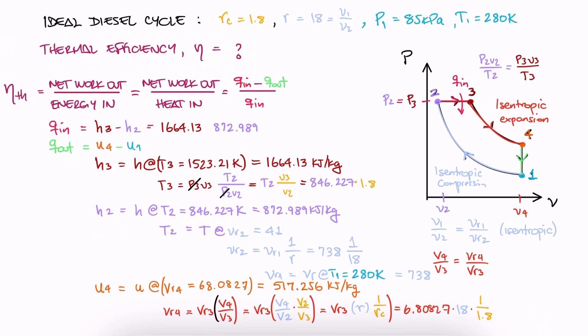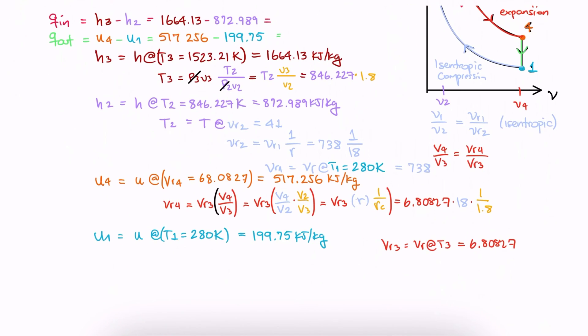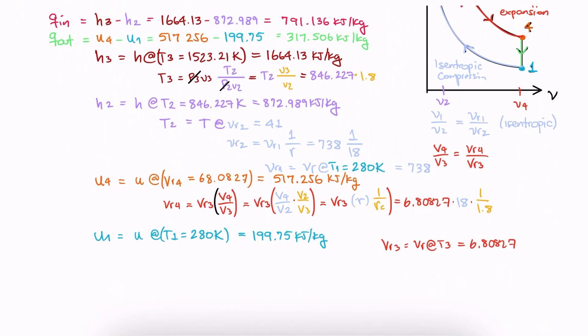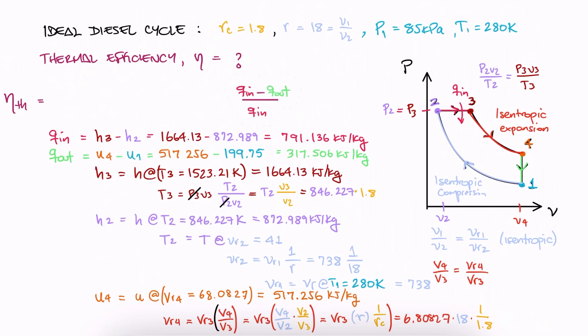We now substitute all specific energy values to find the two heat values, and we substitute these to find the efficiency of this diesel cycle as a decimal. We can multiply by 100 to show it as a percentage.